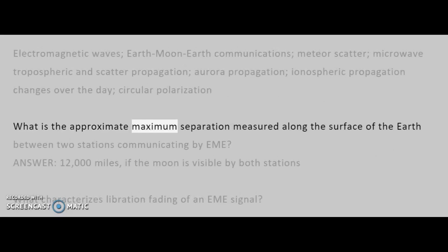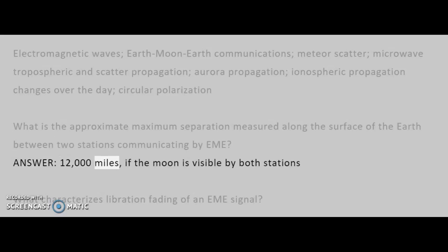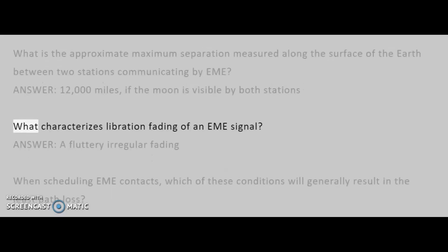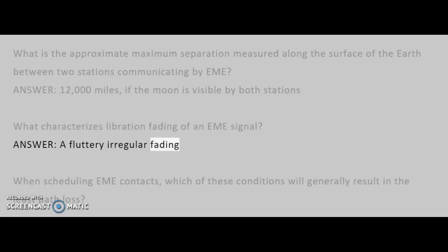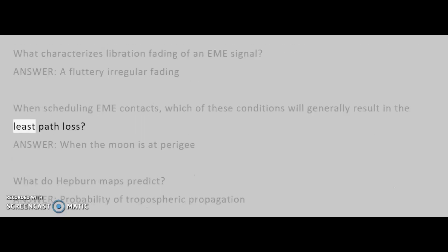What is the approximate maximum separation measured along the surface of the Earth between two stations communicating by EME? Answer: 12,000 miles, if the Moon is visible by both stations. What characterizes libration fading of an EME signal? Answer: a fluttery, irregular fading. When scheduling EME contacts, which condition will generally result in the least path loss? Answer: when the Moon is at perigee.